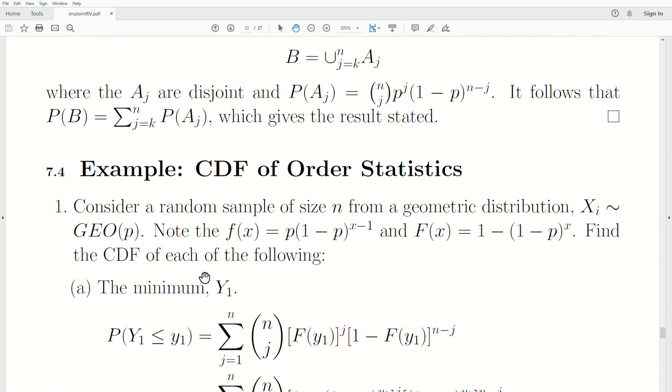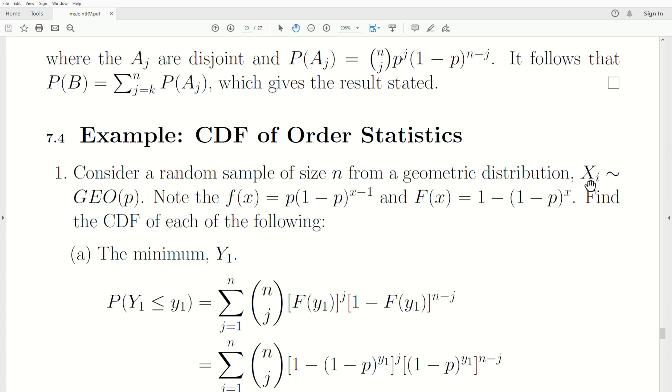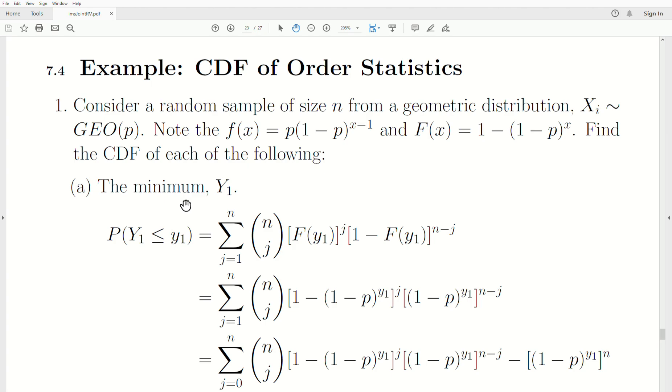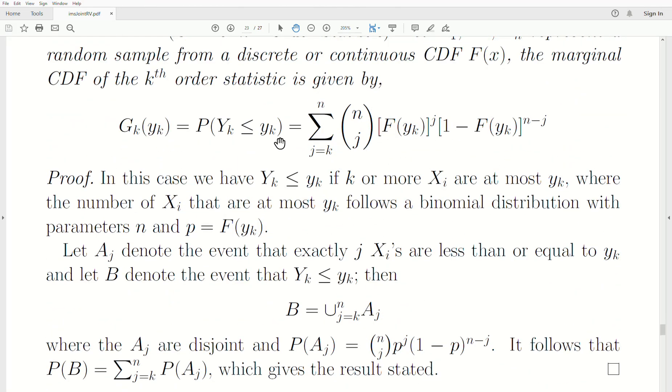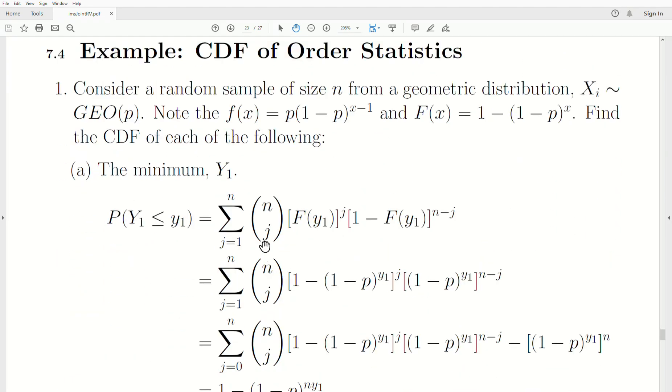Let's give an example. Consider random sample size n from the geometric distribution. Note that the PDF of discrete type, some would get upset with that and say it's probability mass function. You can say it's a PDF of the discrete type and it's fine. The CDF is this for a geometric distribution. So find the CDF of the following: the minimum. We want the CDF of the first order statistic. If we use this theorem, since it's the first order statistic, k is 1. So we sum from 1 to n of these values and we plug in what we know.